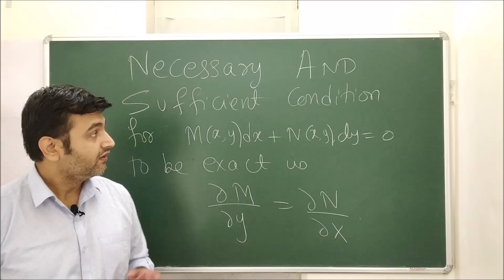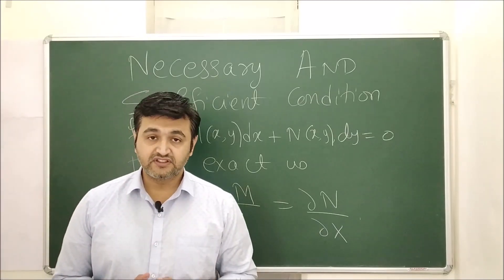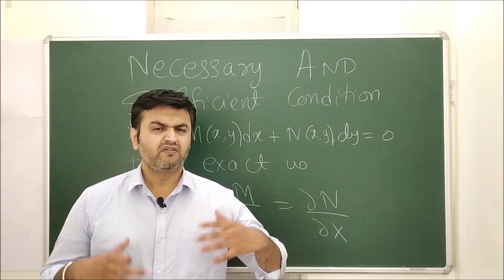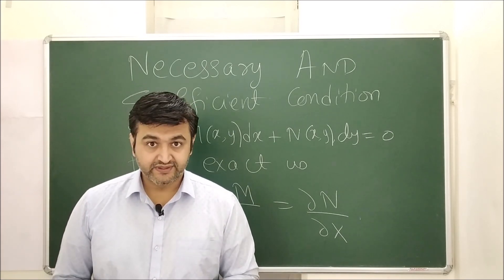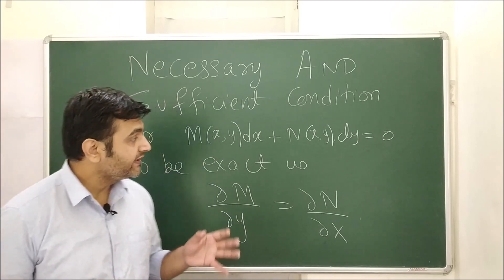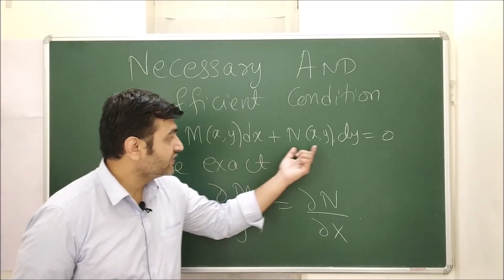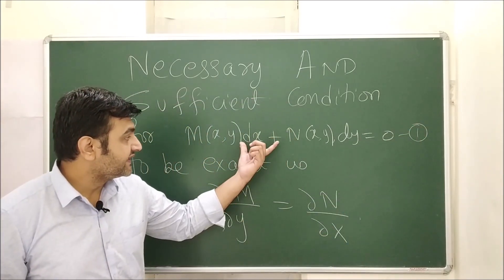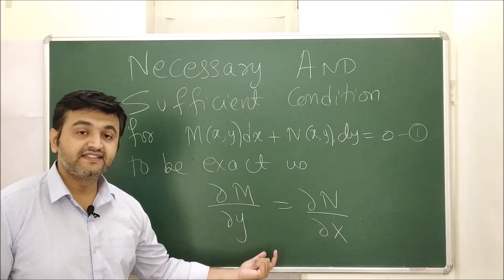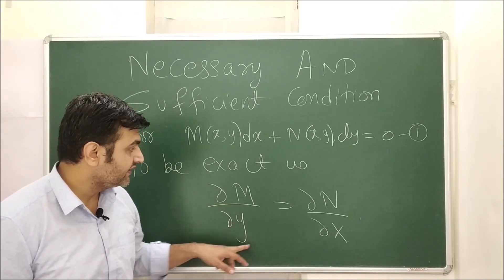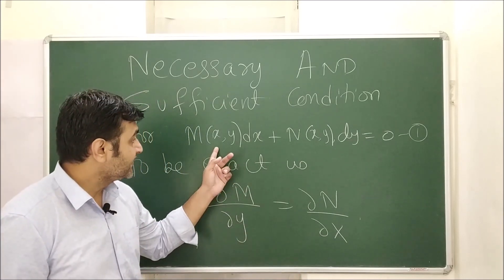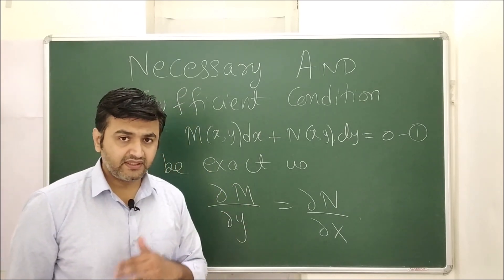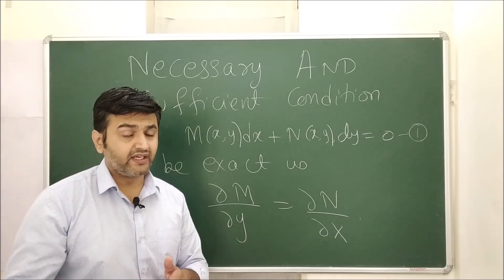Hey everyone. In the last lecture we saw when a first-order differential equation is said to be an exact differential equation — we saw the definition and some examples. While doing the examples I stated this theorem: if you have a first-order differential equation (equation 1), then it is exact if and only if ∂M/∂y = ∂N/∂x, where M and N are continuous functions of x and y. The link to that earlier lecture can be found in the description.